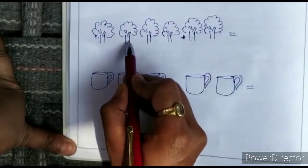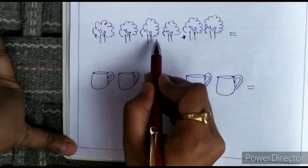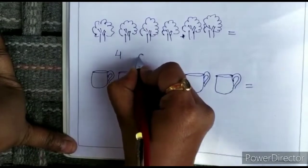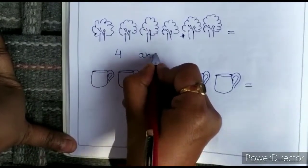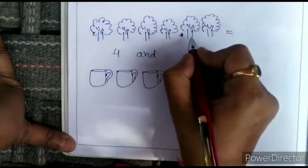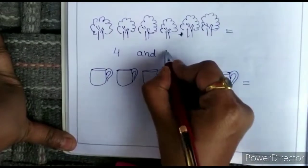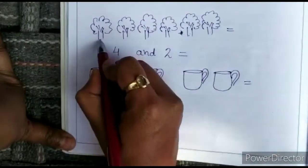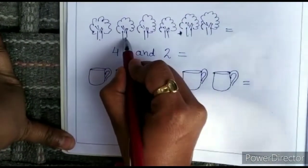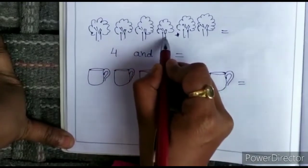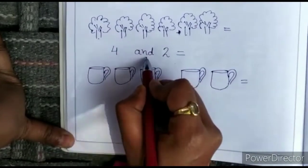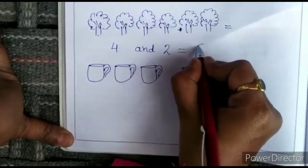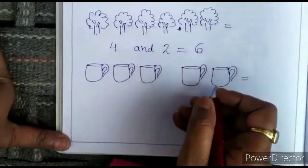So, how many count do you? One, two, three, four. Four, three, one side. And second side. One, two. Two is equals to one, two, three, four, and five, six. Six is equal to six.